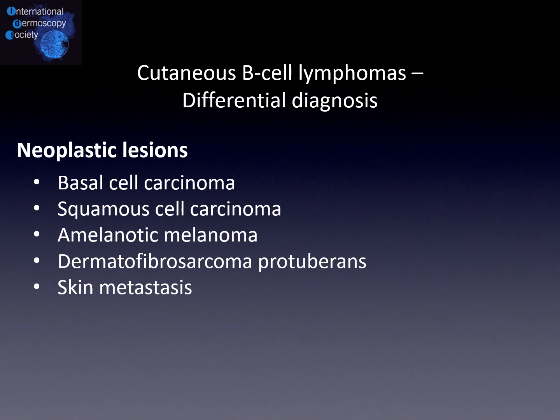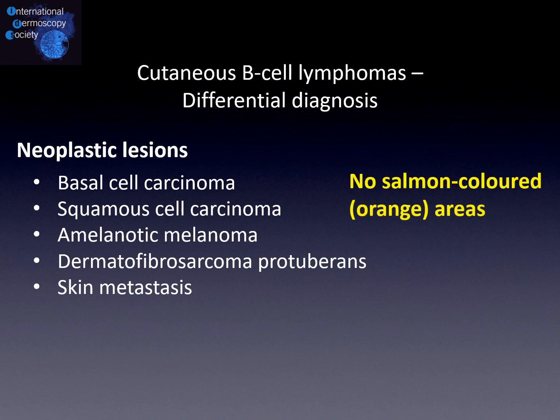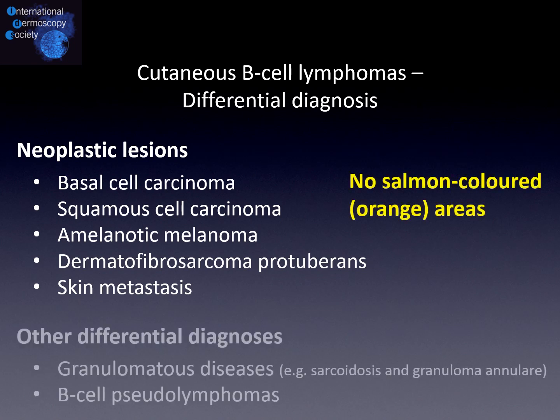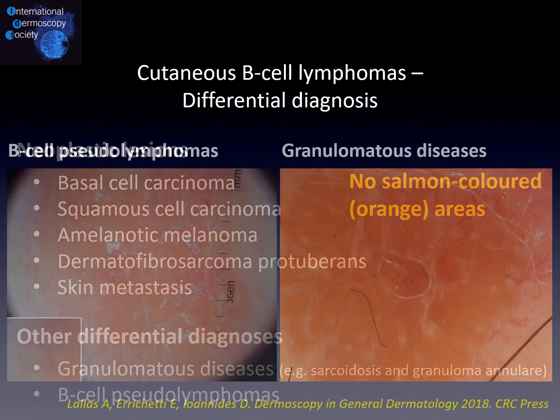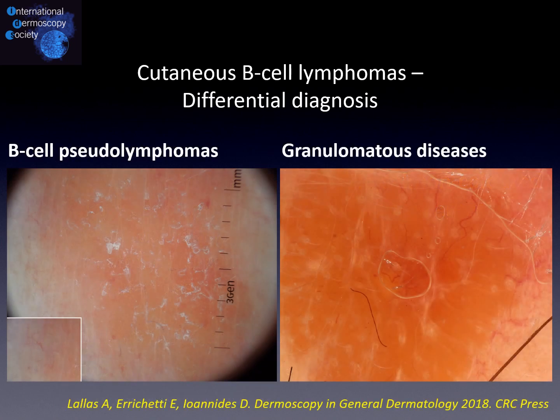Of course, dermoscopy may be useful in differentiating cutaneous B cell lymphomas from other neoplastic lesions, because they typically display other peculiar findings and usually do not show salmon-colored orange areas. However, there are other differential diagnoses that need to be addressed, namely granulomatous diseases and B cell pseudolymphomas. Unfortunately, dermoscopy is not helpful in differentiating cutaneous B cell lymphomas from these conditions, because they typically display the same dermoscopic findings — salmon-colored orange areas and serpiginous vessels. So histological examination remains the only aid in the final differential diagnosis.